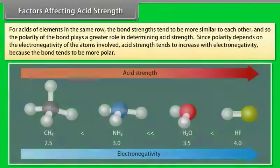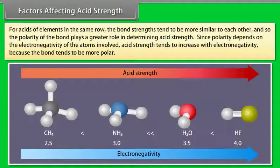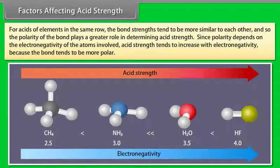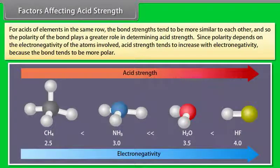For acids of elements in the same row, bond strengths tend to be more similar, so the polarity of the bond plays a greater role in determining acid strength. Since polarity depends on electronegativity, acid strength tends to increase with electronegativity because the bond tends to be more polar.